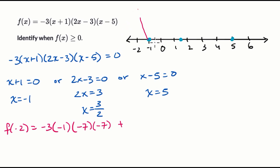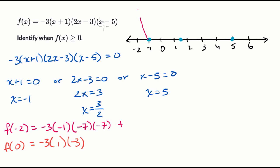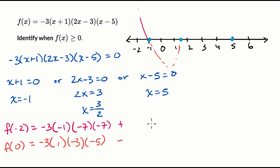Now let's think about what happens in the interval between negative one and one and a half. Let's just do f of zero, since zero tends to be pretty easy to calculate. That's going to be negative three, times zero plus one which is one, times two times zero minus three which is negative three, times zero minus five which is negative five. We have three negatives being multiplied, so this is going to be negative — it's actually quite negative. So the function is negative over that interval.